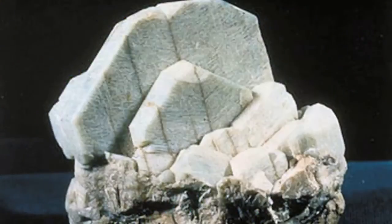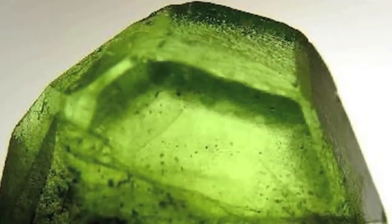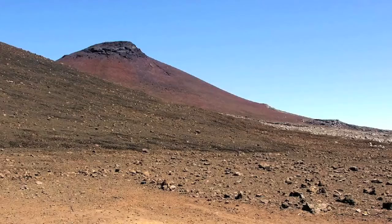The very first CHEMIN diffraction pattern from Mars revealed the presence of the minerals feldspar, two different pyroxenes, and olivine mixed with non-crystalline material. These minerals indicate a mixture very similar to volcanic soils in Hawaii.